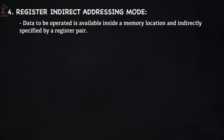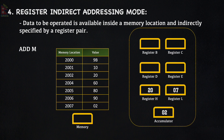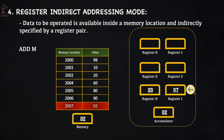Next is Indirect Addressing Mode. Here, the data to be operated on is available inside a memory location and is indirectly specified by a register pair. For example, ADD M — where M refers to the memory location pointed to by the H-L register pair. If the accumulator contains 2 and the memory location contains 2, then after executing ADD M, the accumulator holds the total value 4.